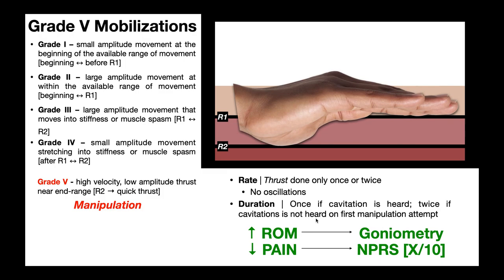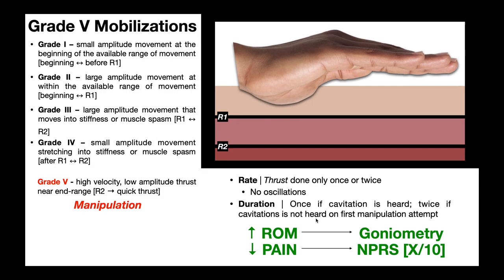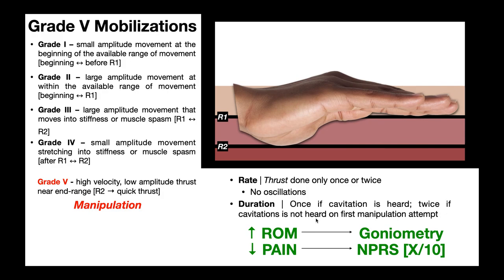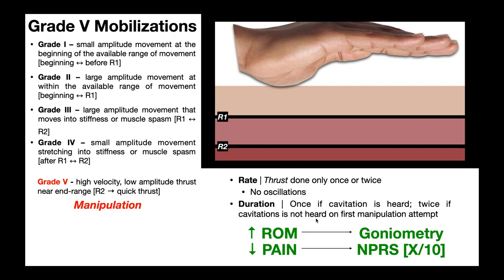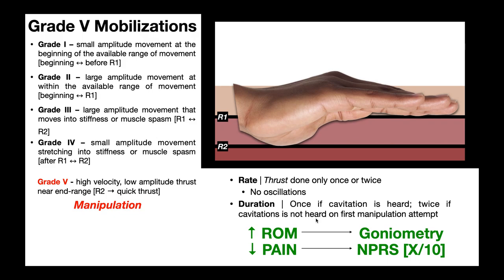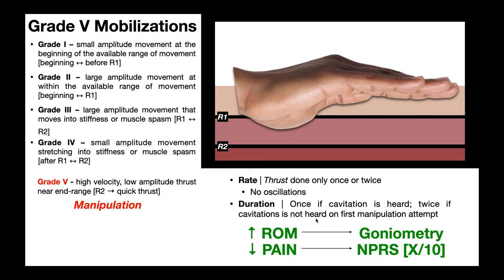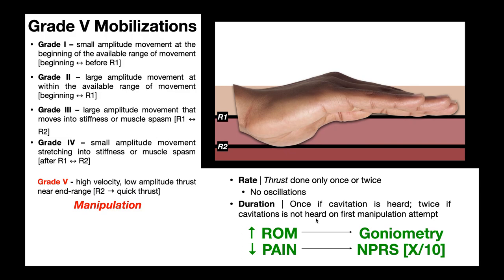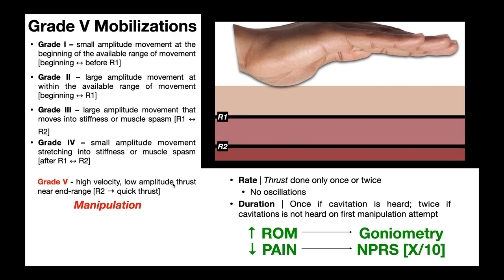The second difference between mobilizations and manipulations is whether or not the patient can protect or resist against the movement. A mobilization is obviously a lot slower, which gives the patient a chance to resist that movement — they could actively contract against it. A manipulation is fast enough that there's no way the patient would be able to react in time to resist the movement. That's another thing that makes this a manipulation: it's a high-velocity, low-amplitude thrust near the end range — starting right around R2 and then a quick thrust.